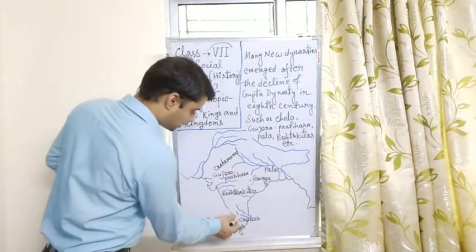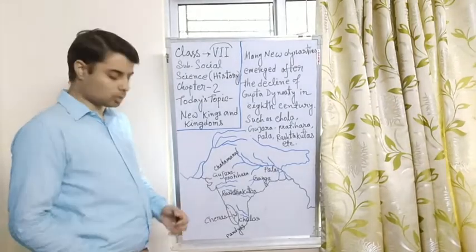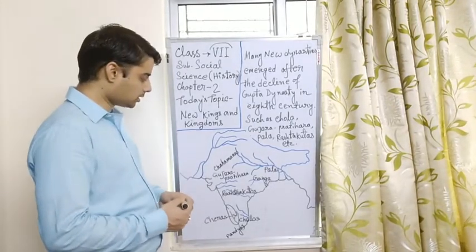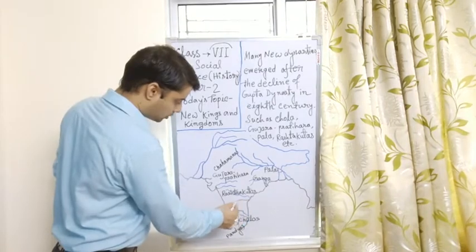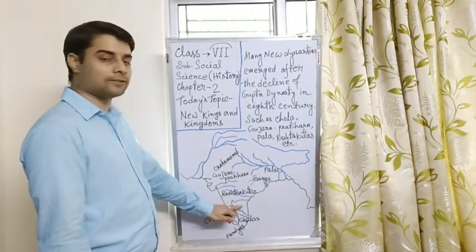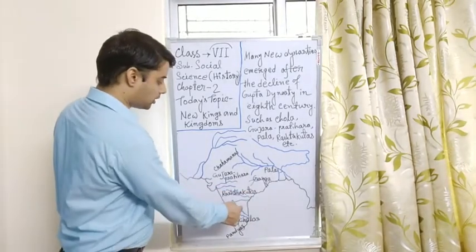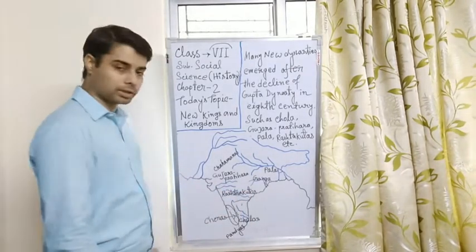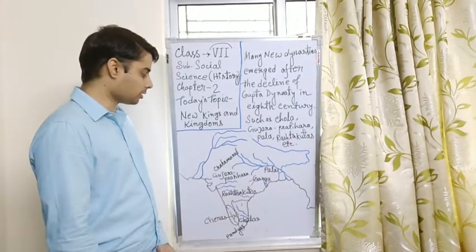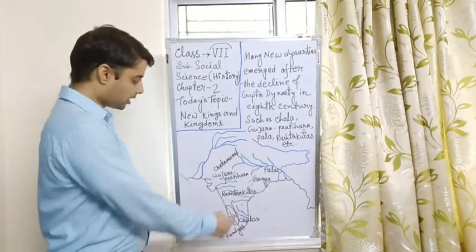So the area of Cheras is these areas. Cholas. Now Cholas, what is the area of Cholas? Cholas ruled up to this vast territory and they also, after some times, they also increased their power and they spread their empire towards the north and eastern India.